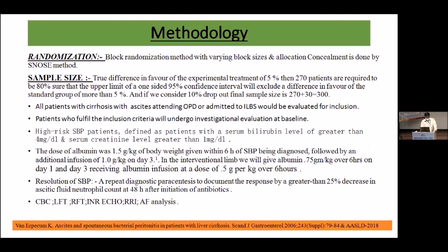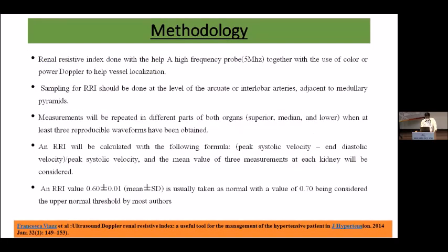High-risk SBP has been defined as a patient with serum bilirubin of more than 5 and creatinine of more than 1. In the standard medical arm, we are giving 1.5 gram per kg of body weight within six hours of diagnosis of SBP and 1 gram per kg on day 3. In the interventional arm, we are giving just half of these doses. Resolution of SBP is defined by repeat diagnostic paracentesis done after 48 hours, documenting a response of greater than 25% decrease in the ascitic fluid neutrophil count.